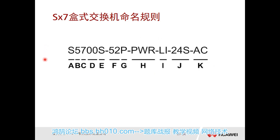To learn about the S-X7 switch, we first need to understand its naming rules, because by following this naming convention you can understand what kind of switch it really is. Looking at the first part — Part A — this 'S' represents that it is an S-Series switch. If it were a CE switch, this part would become 'CE', making it a CE switch.